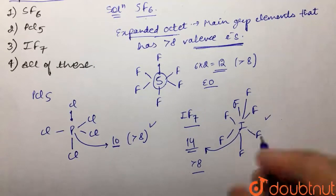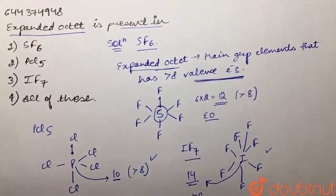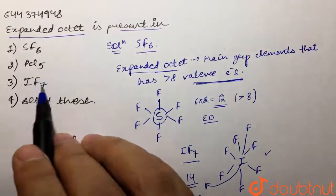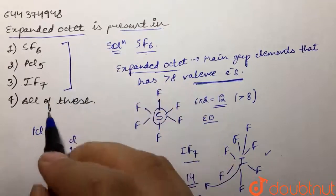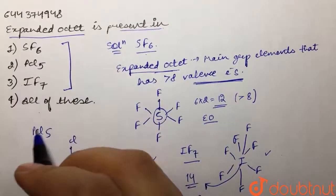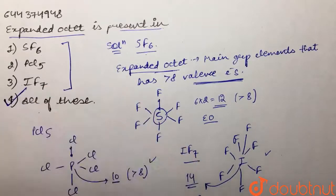So if you see the options, they are saying SF6, PCl5, IF7, then all of these. Because all of these has expanded octet, that is why we can say that our option number four would be correct.